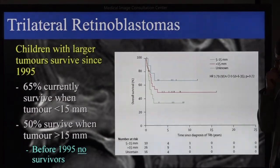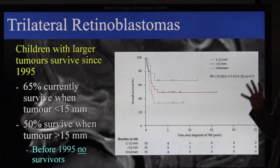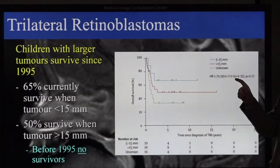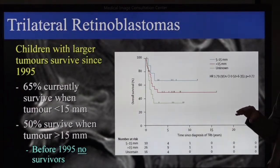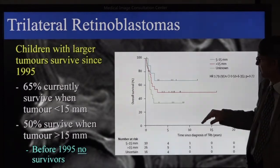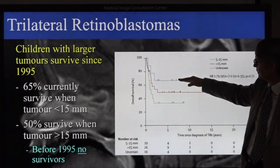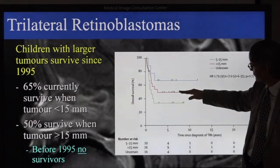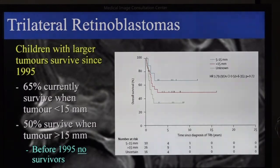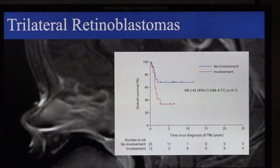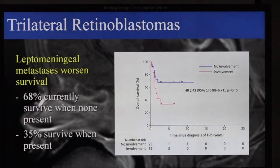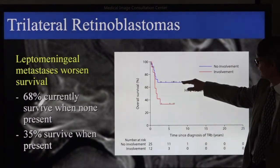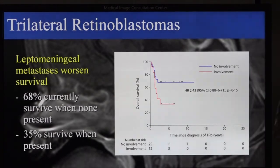Also, chemotherapy is able to cure tumours that were incurable before 1995. In the original paper I made the division at 15mm size, because no one survived with a tumour bigger than 15mm, whereas approximately 25% at that time survived if the tumour was smaller than 15mm. But now we see 65% survival if the tumour is less than 15mm, and even when the tumour is bigger than 15mm, there is 50% survival. If there is spread along the neural axis, the prognosis is worse. If there is no spread, approximately 70% are cured. And even if there is spread with cerebrospinal fluid to the medulla, it's about one third.